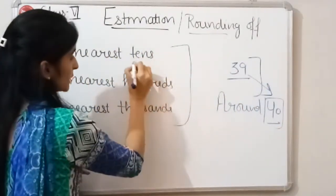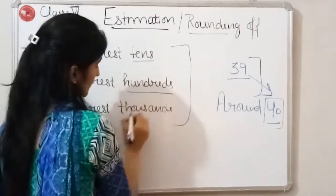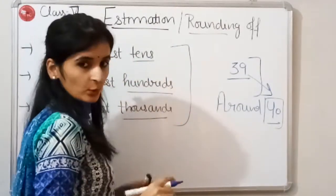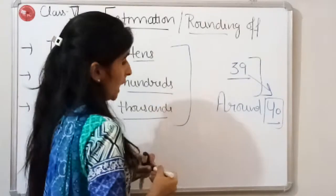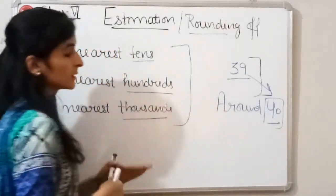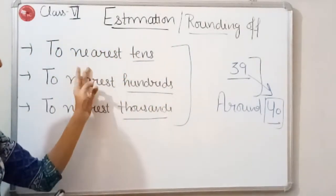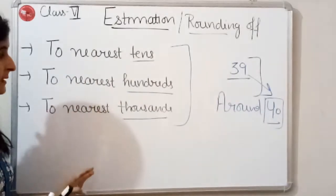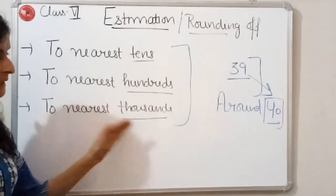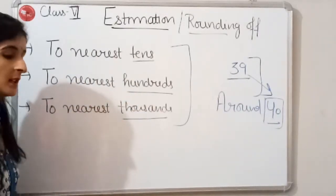We can round off numbers to nearest tens, hundreds, and thousands. We will start with nearest tens, then hundreds, and then come to nearest thousands.